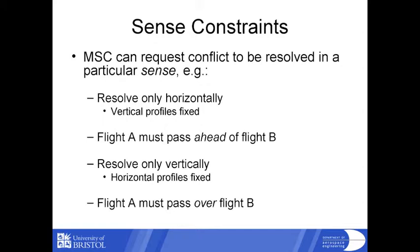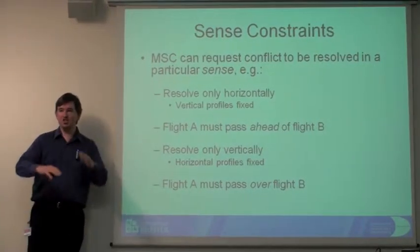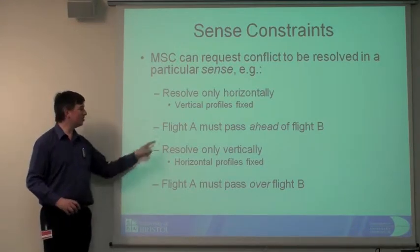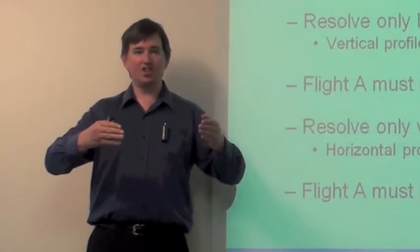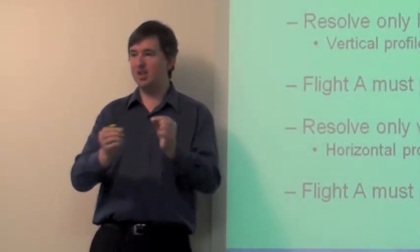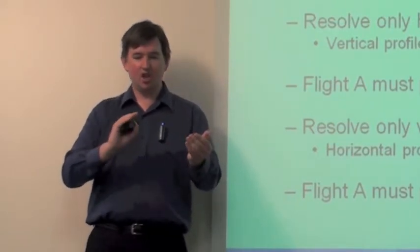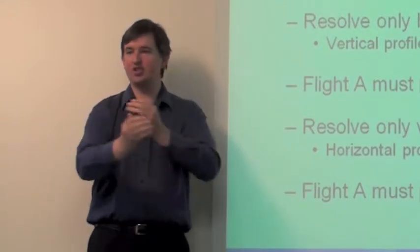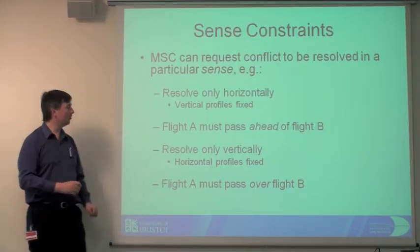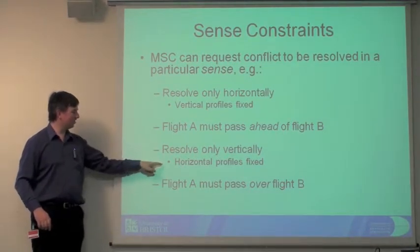The first thing is sense constraints - constraining the sense of a resolution. For example, resolving horizontally only is mathematically very simple: you fix the Z's and T's so only the X's and Y's can change. You can further go in and say who must go ahead of who. A lot of rules of the air actually specify the sense of conflict resolution. There may also be uncertainty reasons why you'd prefer one aircraft going around the front versus the back. We've got translations of all of that. Similarly we can do the same vertically - fix the horizontal profiles and choose which aircraft goes over the top.